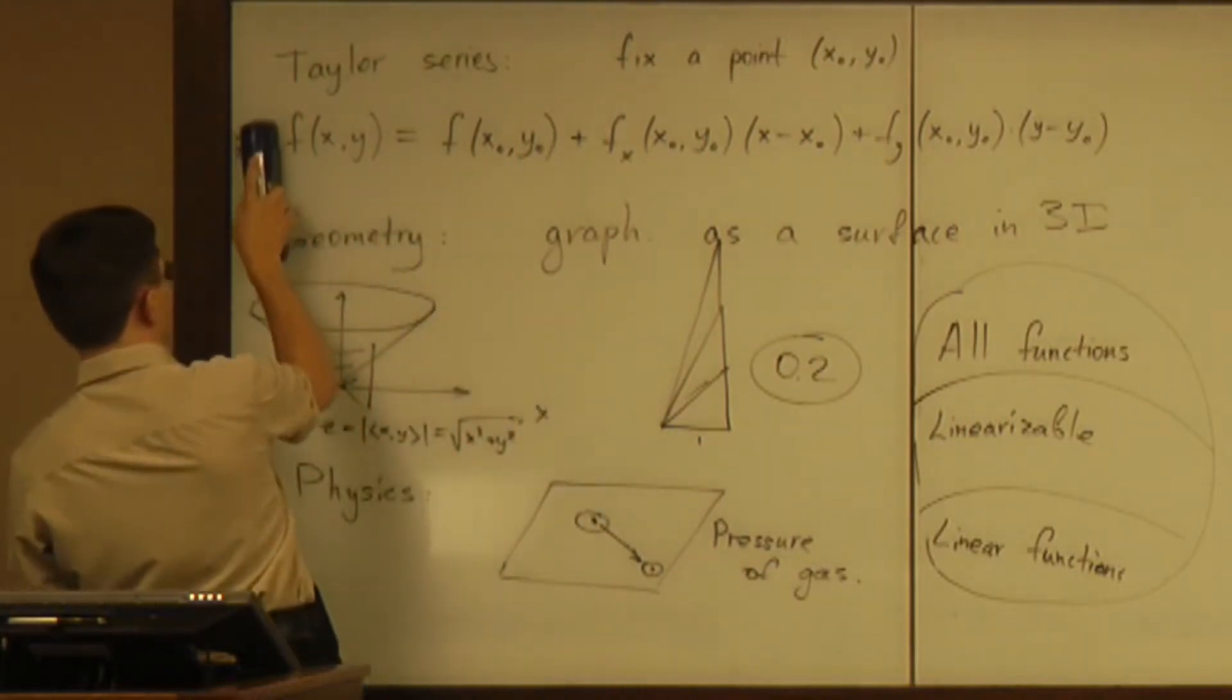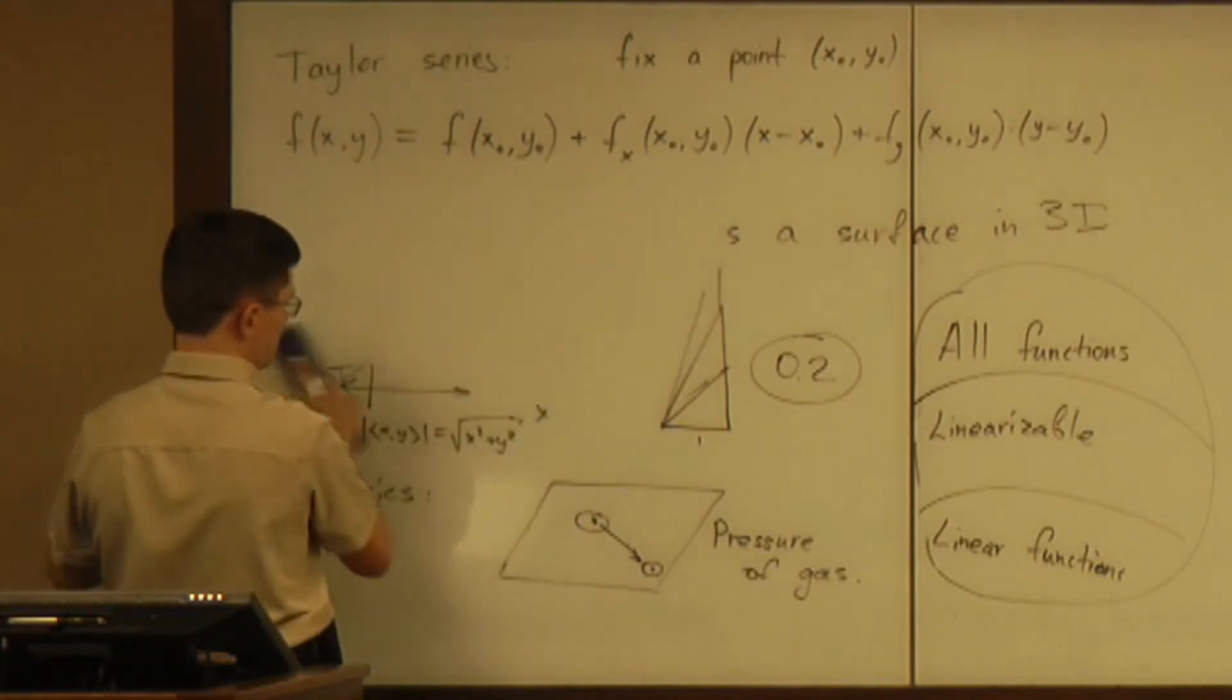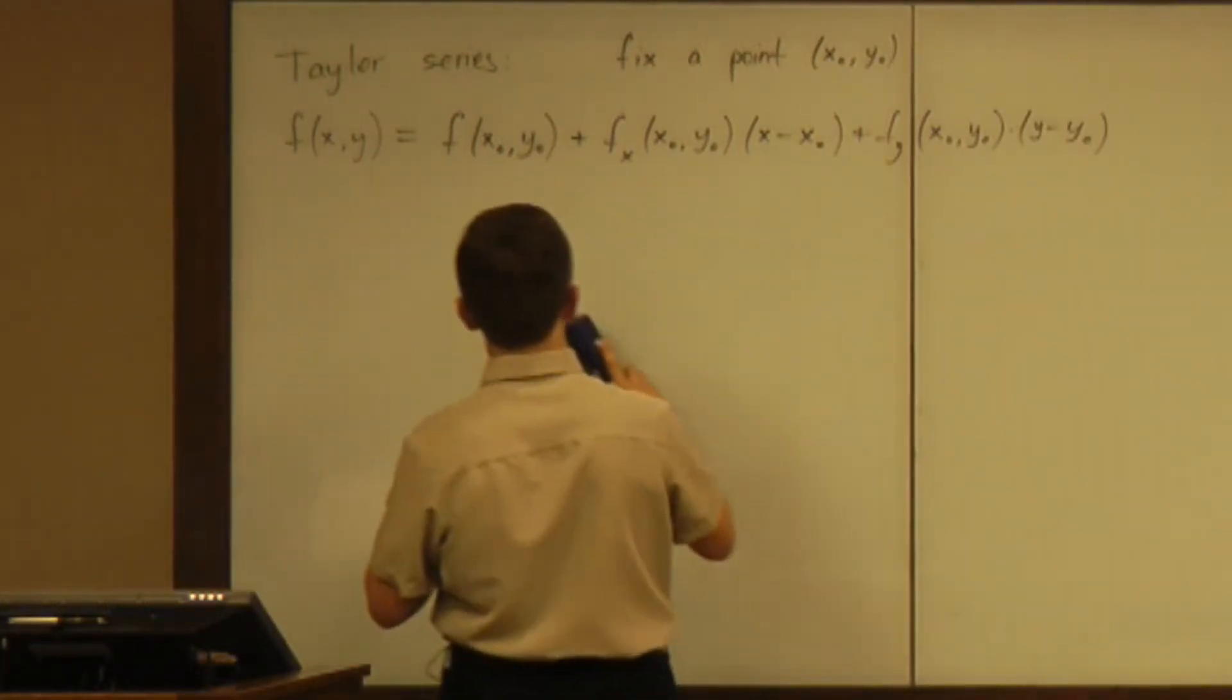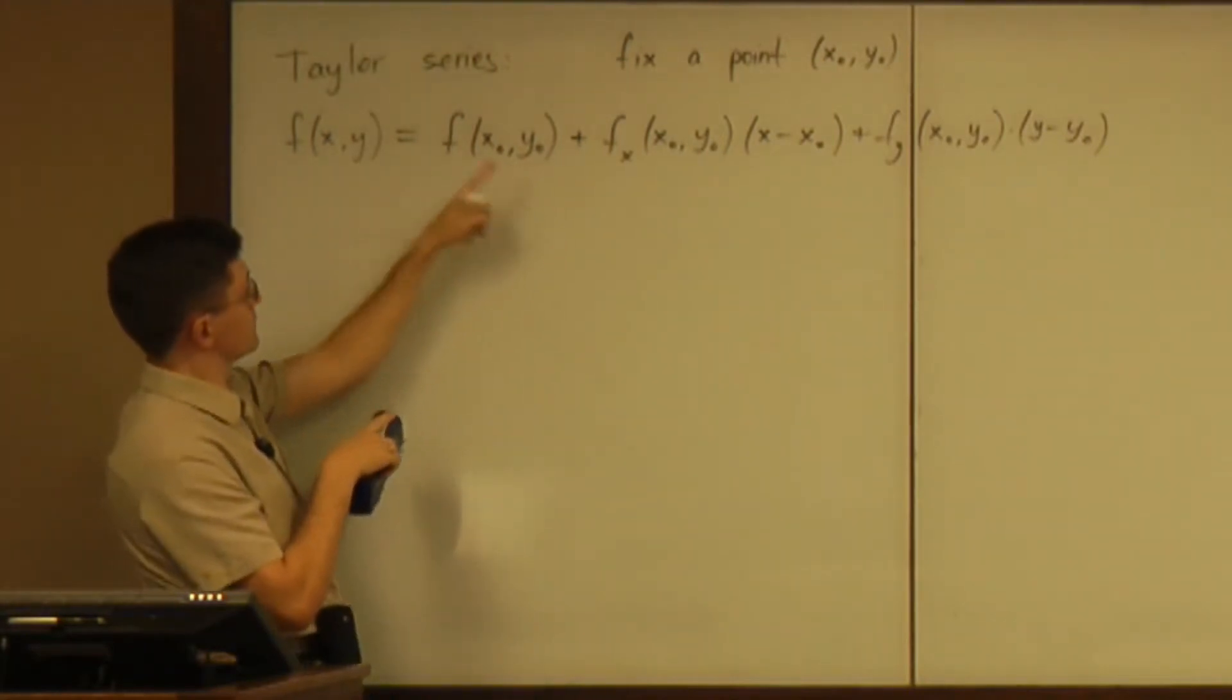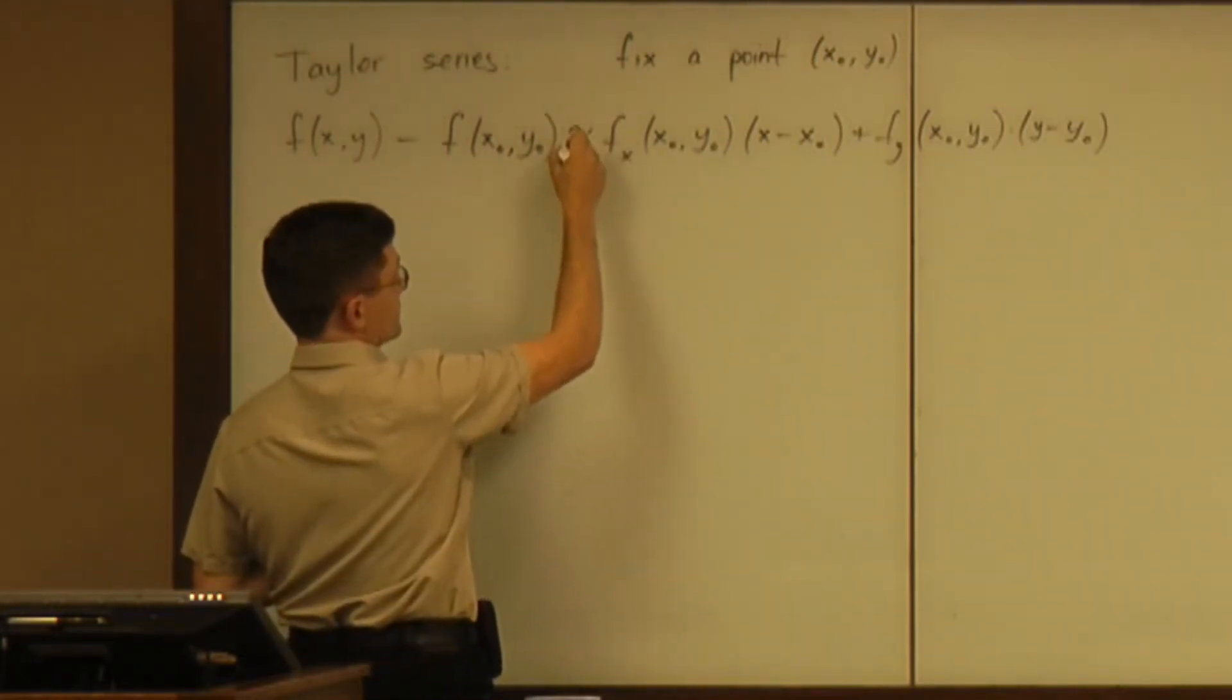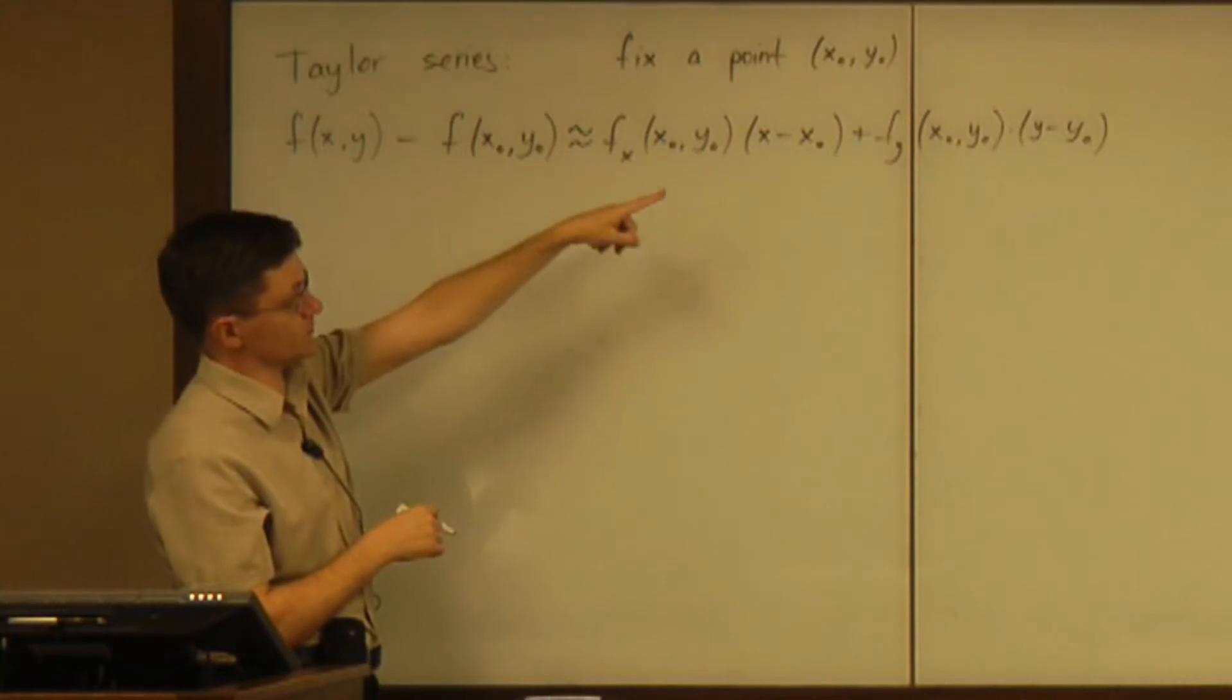Well, the stuff we did previously with this formula was we took this number, the value at the given point to the left, saying that the difference is equal or rather approximately equal, right, because I erased the rest of our series. So the difference is approximately equal to that.